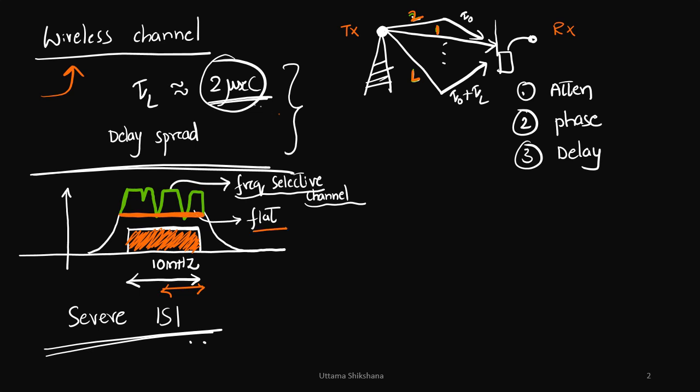That is when we call it as flat fading channel. If the channel was like this, then it would have been easy to design the system. But what was observed? It was observed that channel was not flat. It had got a lot of bad channel conditions for the entire 10 megahertz bandwidth. The reason was there was a severe inter symbol interference.